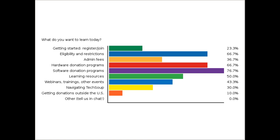It looks like the top topics were software donation programs, followed by hardware donation programs tied with eligibility and restrictions. The next most popular topics were learning resources and webinars, training, and other events. We will definitely cover all of those things, and we will also be able to touch on most of the other questions that got slightly fewer votes.